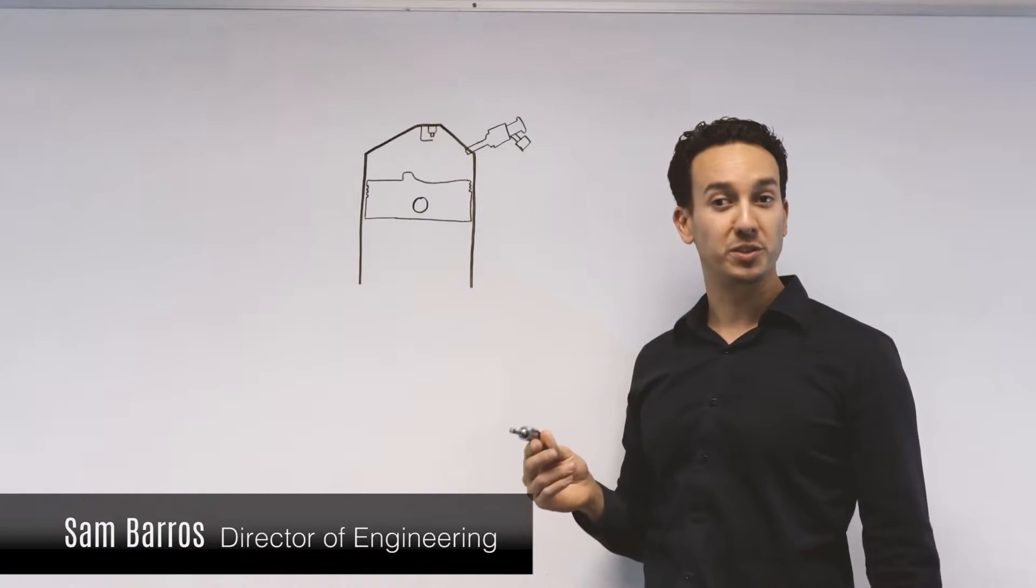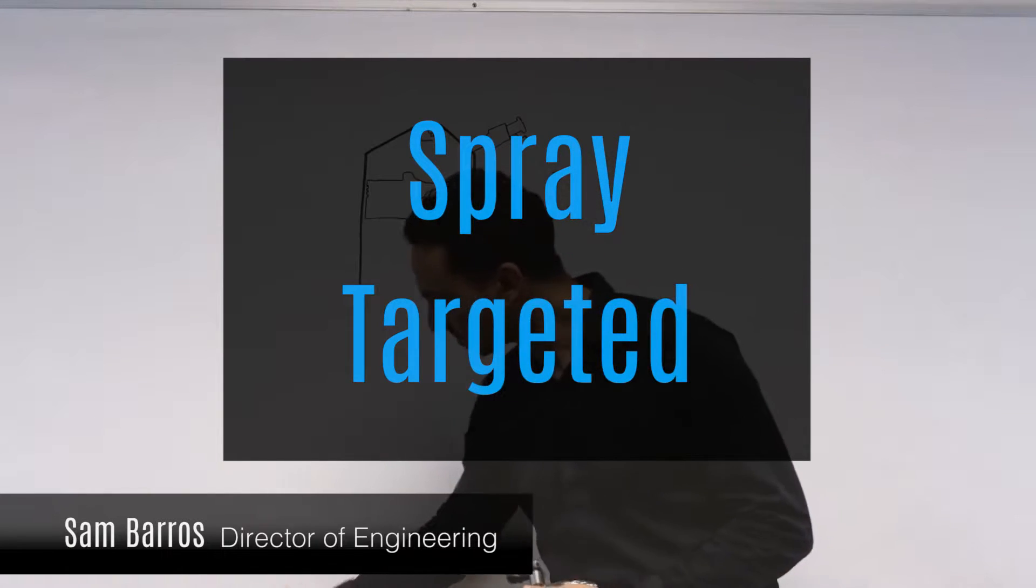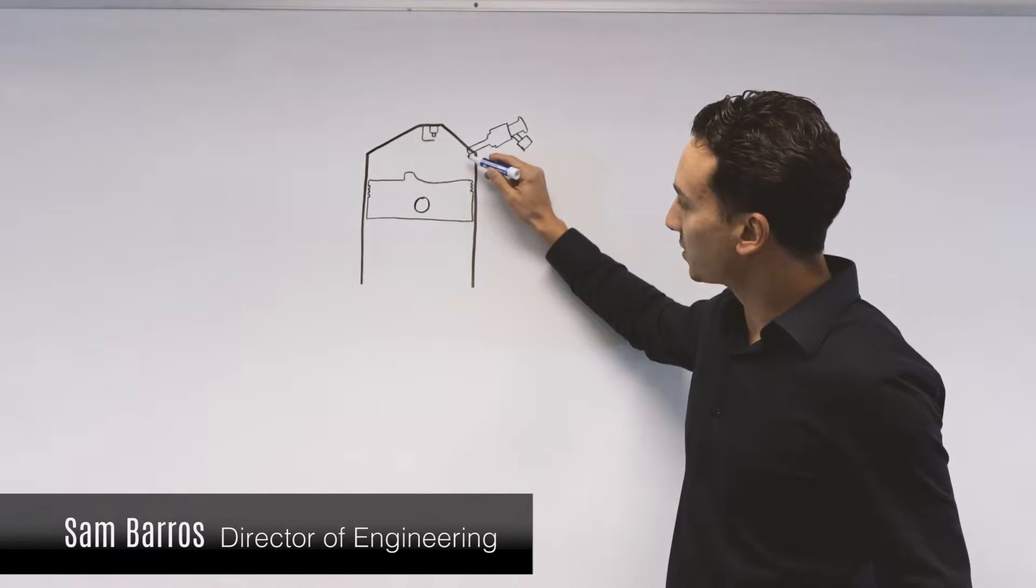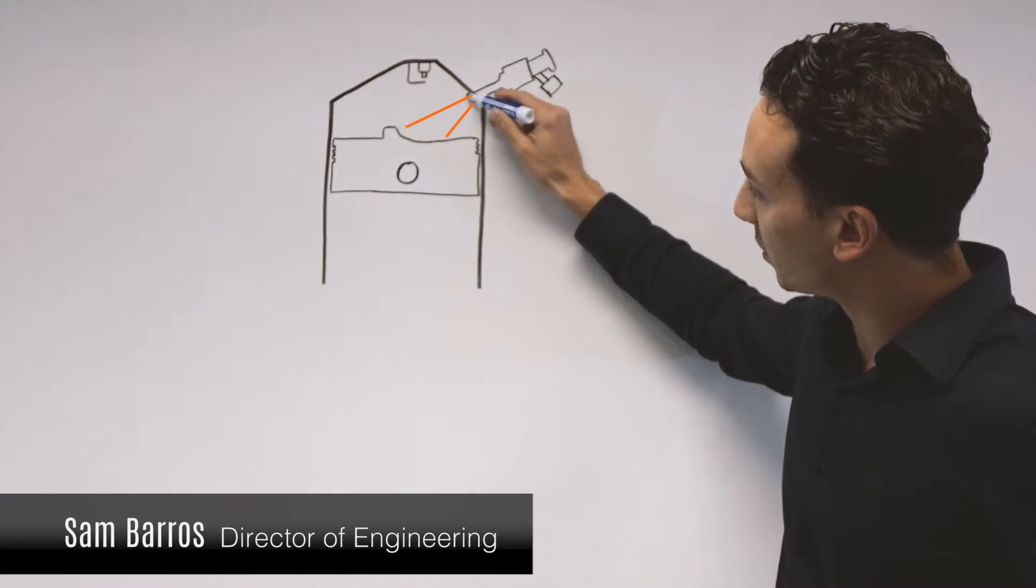Because of that, Direct Injection fuel injectors are all spray targeted. The target is always aimed down towards the piston bowl.